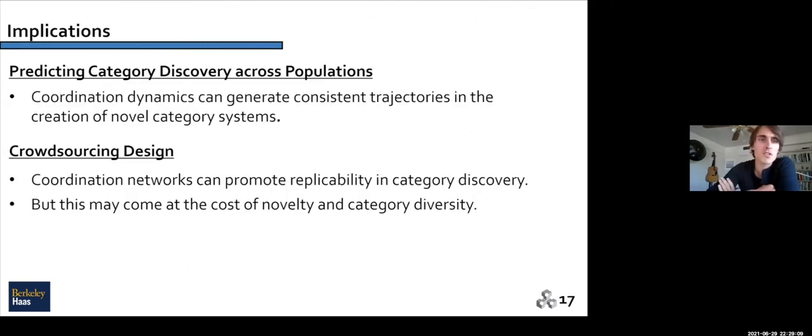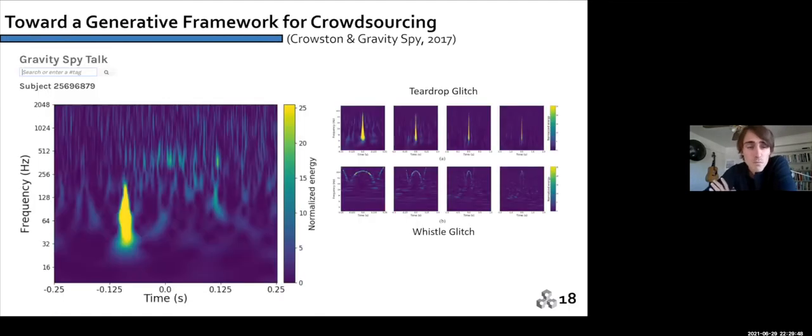The implications first is, we're gaining some ability to predict categories. You are at 10 minutes, just so you know, but you're wrapping up. Yeah, perfect. Thank you, Kevin. So we found that coordination dynamics can actually generate consistent trajectories in the form of category systems. And I want to conclude with some thoughts about what this means for potential crowdsourcing design. So we find that coordination networks can promote replicability and category discovery in these novel domains. This may come under the cost of the reduction of novelty and category diversity, which is what we've seen in the smaller populations. So they have different benefits for scientific purposes.